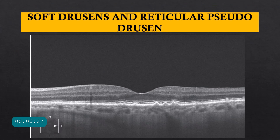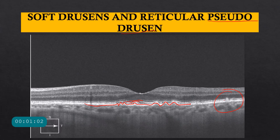Now I want you to look at a special kind of drusen called the pseudodrusen. You can see the lumpy bumpy appearance of the RPE — those are your drusen. Above the RPE we have the ellipsoid zone and the outer limiting membrane. But look at this picture: there is a triangle-shaped deposit occurring above the level of the RPE. Such a structure that occurs above the RPE — not below — but looks very similar to drusen on a clinical fundus picture is called a pseudodrusen.